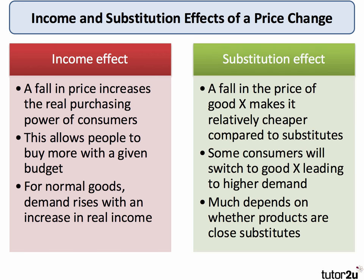The substitution effect can also be quite powerful and important. A fall in the price of good X — let's make it the price of coffee — makes coffee relatively cheaper compared to substitutes such as tea or bottled water. If that happens, some consumers may switch to coffee, leading to increased demand. The key to the scale of the substitution effect is whether two or more products are close substitutes, and also critically how easy and how inexpensive it is to make a switch. So when the price changes in the market, there's an income effect and a substitution effect.